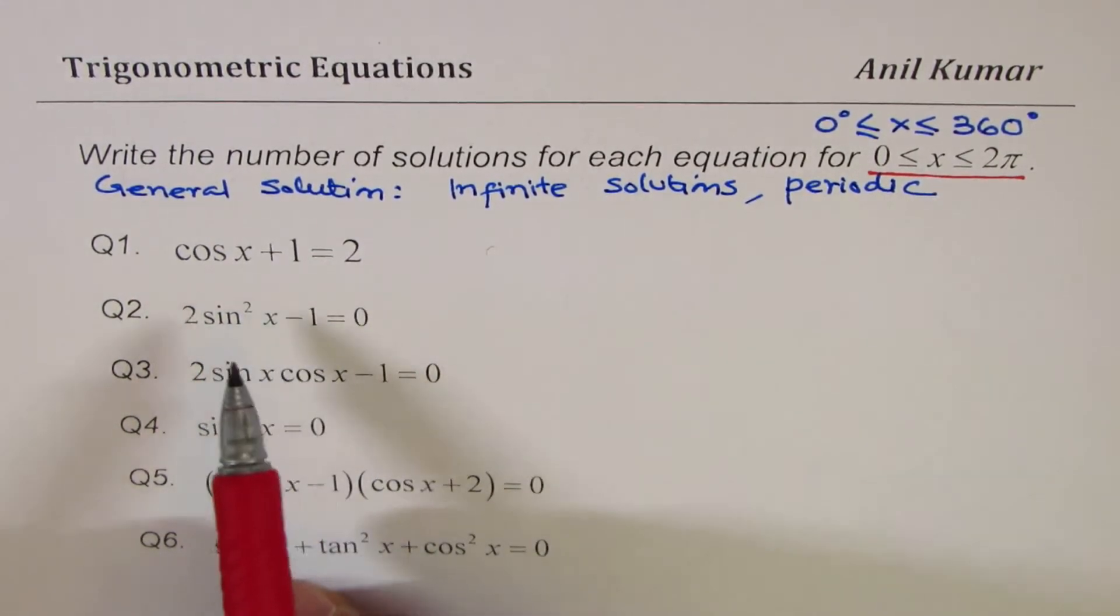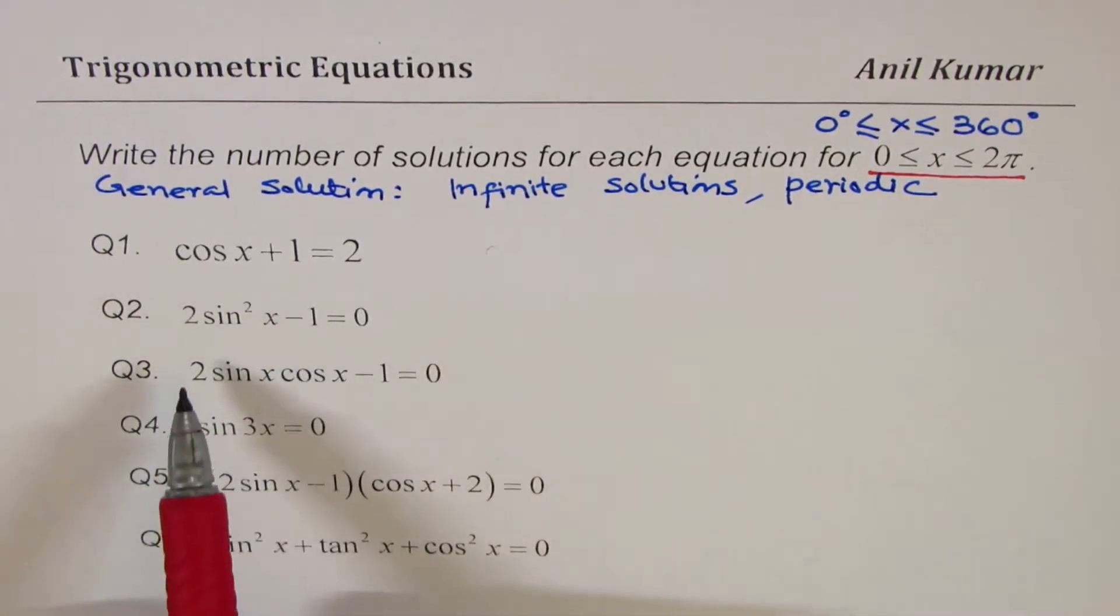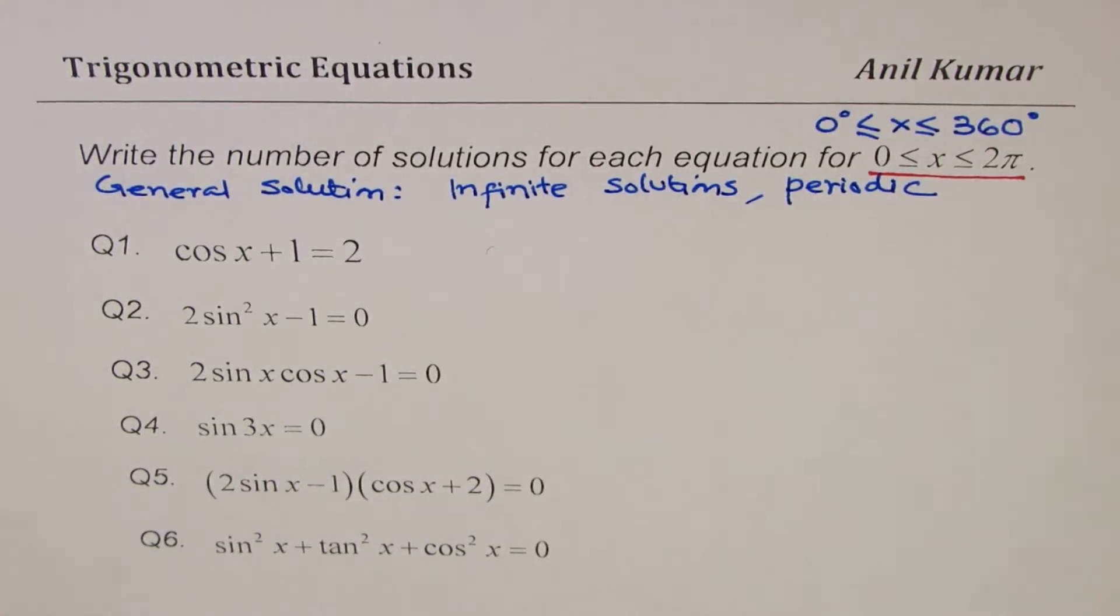We will take this one by one. Q1: cos x + 1 = 2. Q2: 2sin²x - 1 = 0. Q3: 2sinx cosx - 1 = 0. Q4: sin 3x = 0. Q5: (2sinx - 1)(cosx + 2) = 0. Q6: sin²x + tan²x + cos²x = 0. You can actually pause the video, answer, and then look into my suggestions.